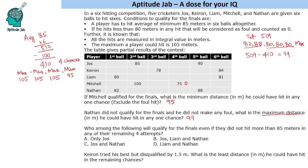Next question: who among the following will qualify for the finals even if they did not hit more than 85 meters in any of the remaining four attempts? Not hitting more than 85 means 85 is possible as the maximum. Checking option by option: Joss hitting 85 in all four remaining attempts would give an average above 85, so yes, he can qualify. For Liam, hitting 85 in all four remaining attempts would not bring his average to 85 because he has already hit less than 85 in two chances, so Liam cannot qualify.